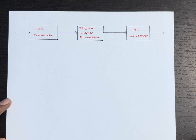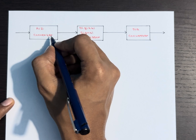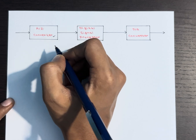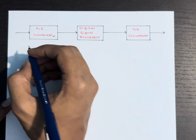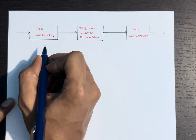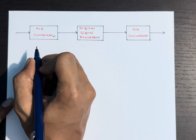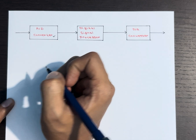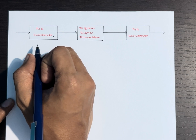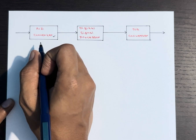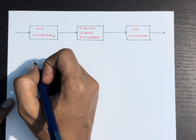To do this conversion we use an analog to digital converter (ADC). The purpose of the ADC is to convert the analog signal to a digital signal. The process involves sampling and quantization of analog signals, followed by converting the quantized samples into suitable binary codes.